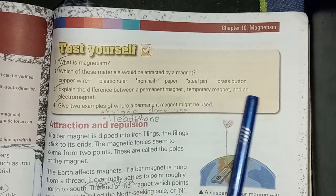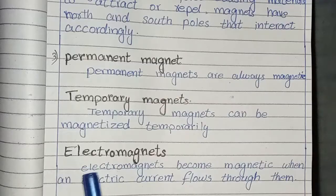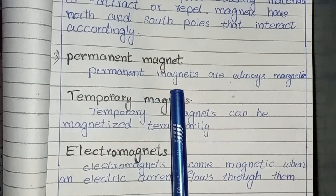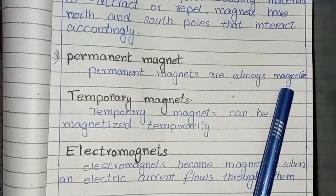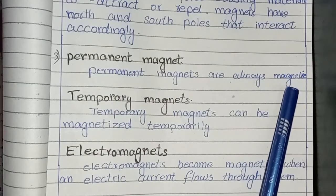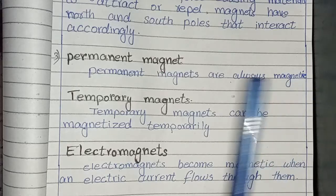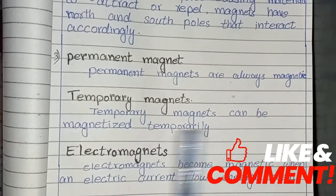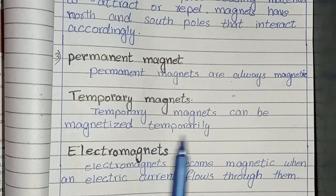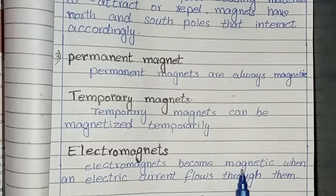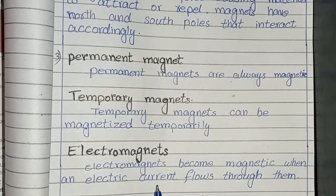Third question: explain the difference between a permanent magnet, a temporary magnet, and an electromagnet. Permanent magnets are always magnetic. Temporary magnets can be magnetized temporarily. Electromagnets become magnetic when an electric current flows through them.